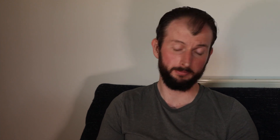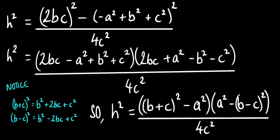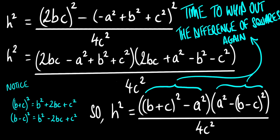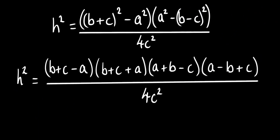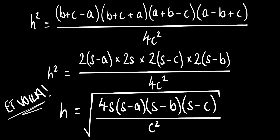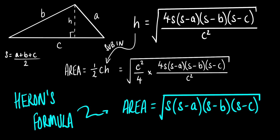Let's get these over the same denominator, and immediately we can apply the difference of squares rule. Now I can simplify this a little and apply the difference of squares rule again. Let's bring the semi-perimeter term S back in, since all these brackets can be represented with it somehow, which brings us to this neat-looking equation for H. All that's left is to put it into that trusty old equation, half base times height — and there we have it, Heron's formula!